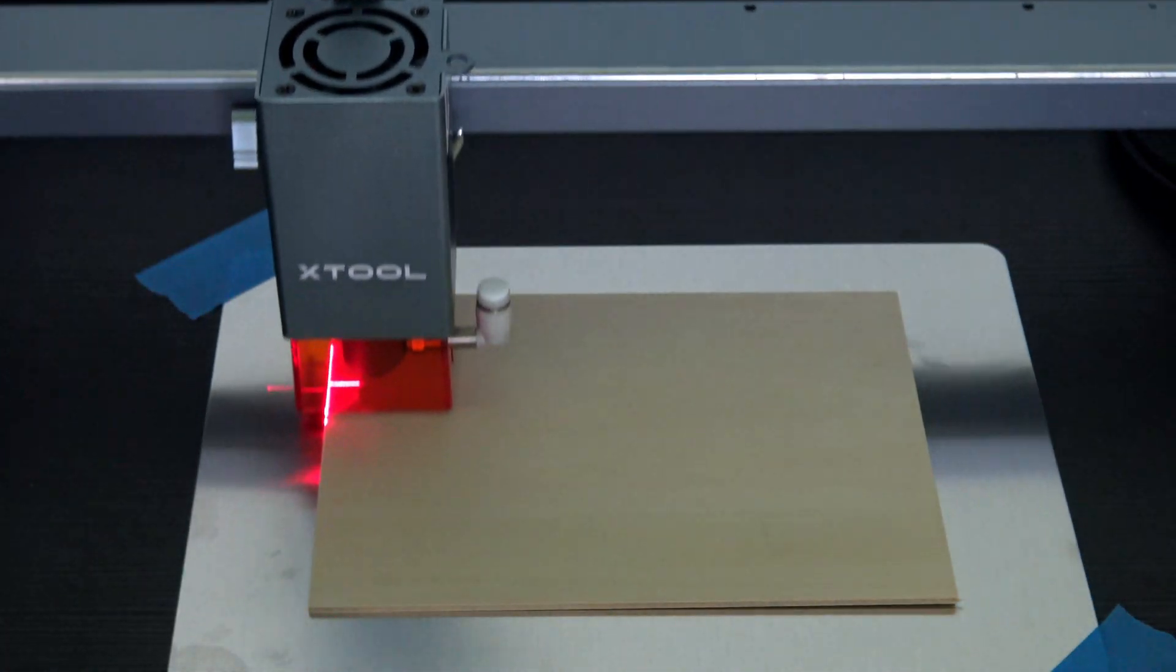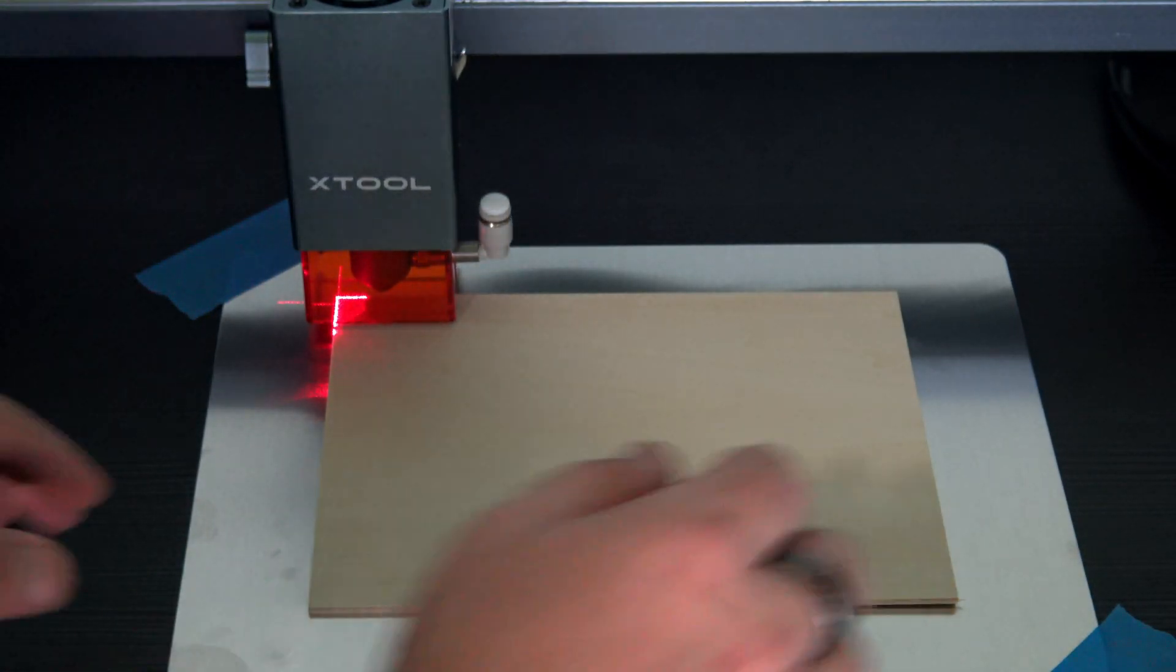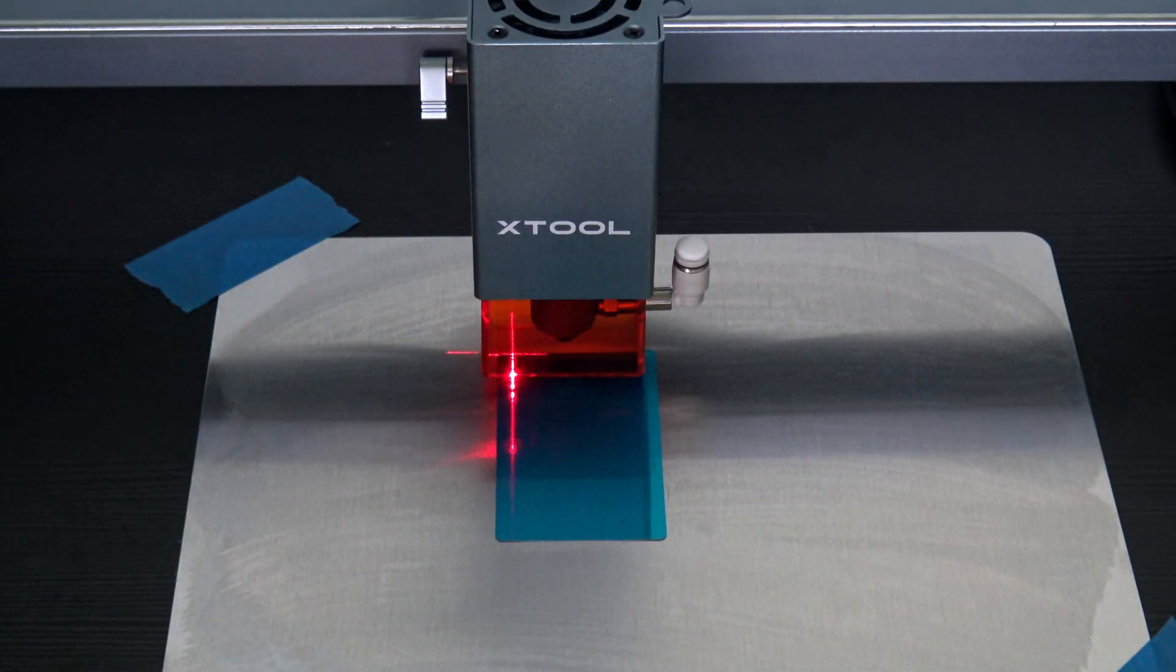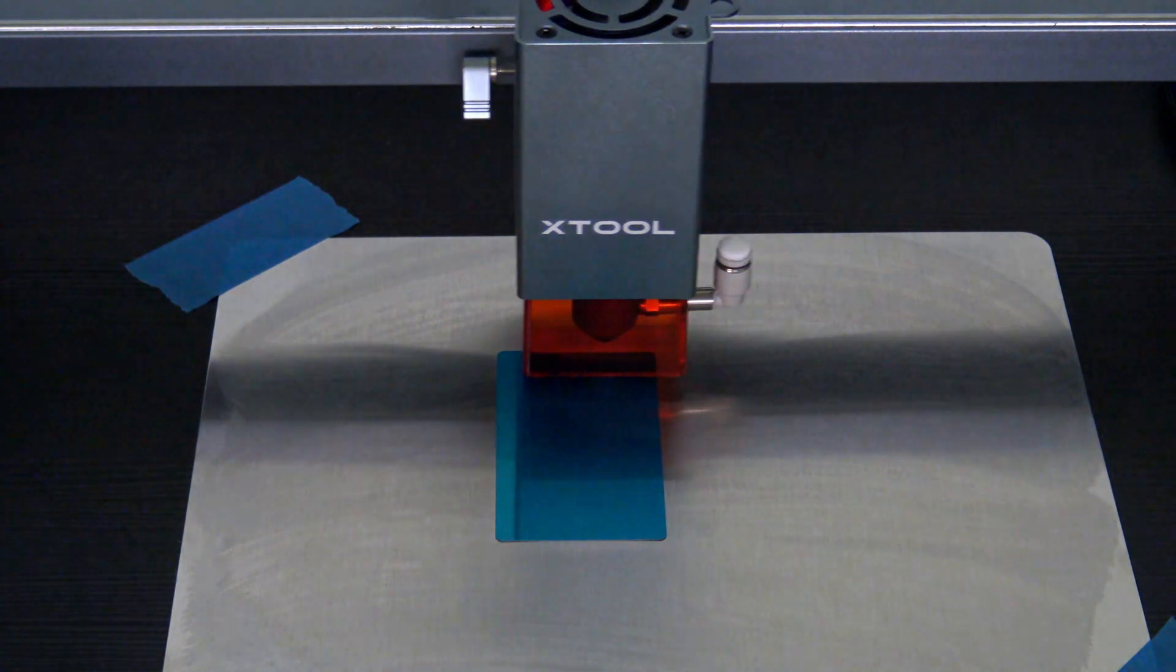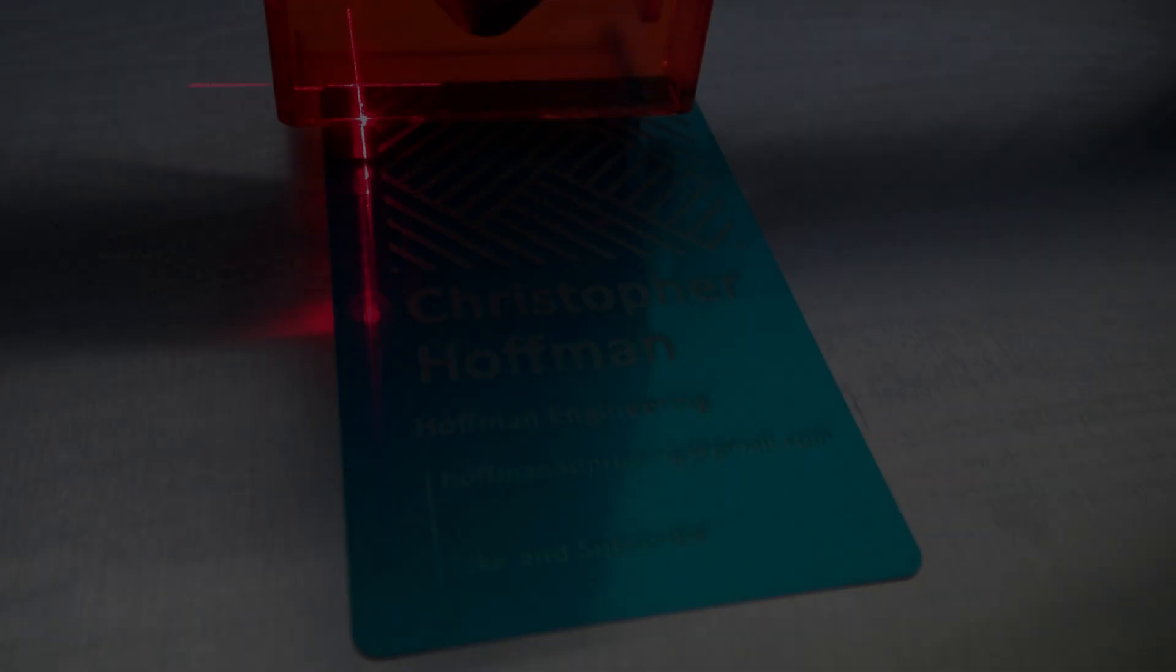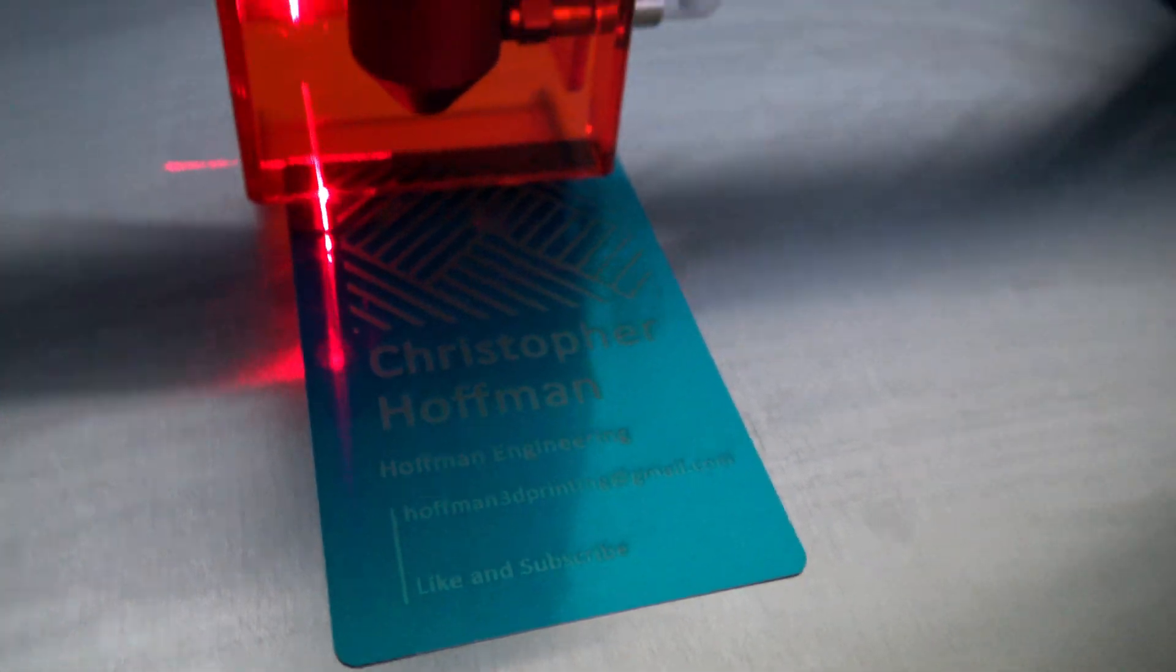That X is located 16 millimeters to the left of the actual laser. But don't worry, the software will automatically account for that. Simply position the red light where you want to start, and the laser will automatically move the 16 millimeters so that it starts in the correct location. That positioning light is extremely convenient, allowing for simple alignment of your material.